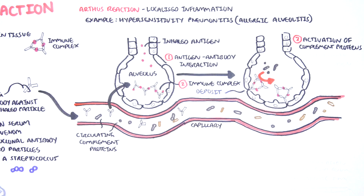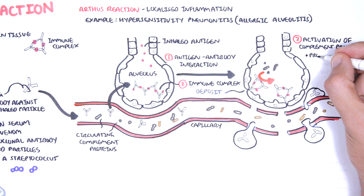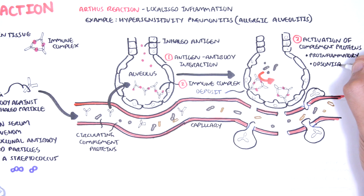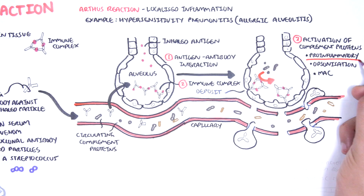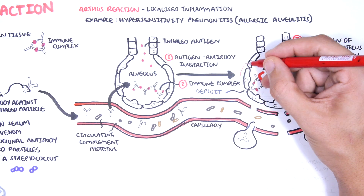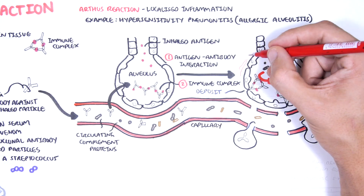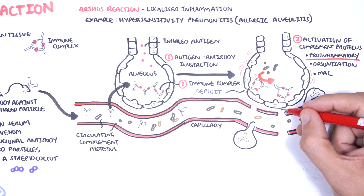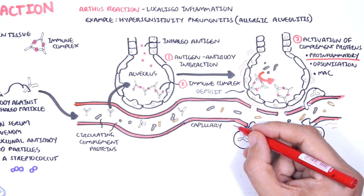Deposition of the immune complexes activates complement proteins. Complement activation results in three main things: firstly, release of pro-inflammatory cytokines; secondly, opsonization, which promotes phagocytosis through neutrophils; and thirdly, formation of the membrane attack complex. Importantly, this is all a localized response.